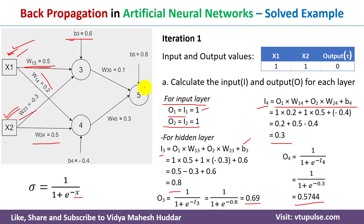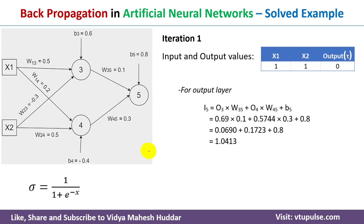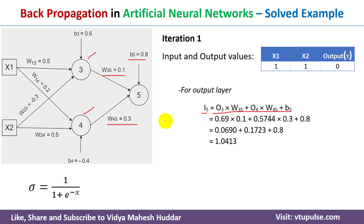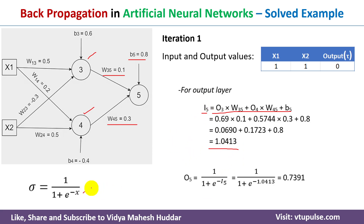The next step is to find the input and output at the output layer. The input at neuron 5 is: i5 = (o3 × w35) + (o4 × w45) + b5. Substituting all values we get i5 = 1.0413. Applying the sigmoid function, the output at neuron 5, o5 = 0.7391.